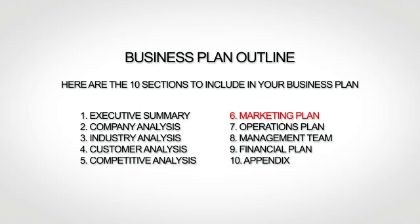The sixth section is your marketing plan, where you lay out your marketing strategy. The seventh section is your operations plan, where you explain how you actually run or will run your business. The next section, the management team, is where you provide bios of your team. The ninth section is your financial plan, where you give financial forecasts. And finally, the tenth and last section of your business plan is your appendix, where you provide any additional supporting information.